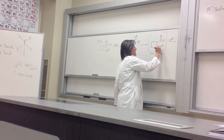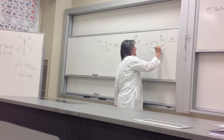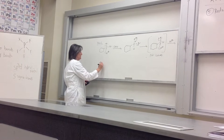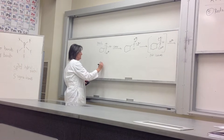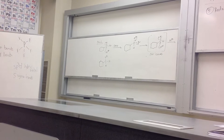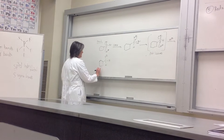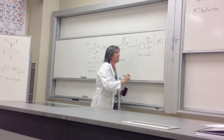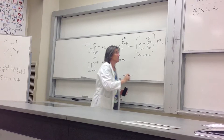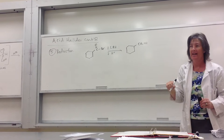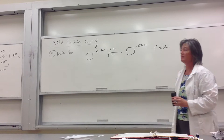The hydride attacks the carbonyl again — same mechanism as before. Electrons go up. This time we're stuck — we can't reform the carbonyl because there's no good leaving group, so it just sits there. When you do the H3O+ workup, you end up with the primary alcohol. So reductions of acid halides give you the primary alcohol.